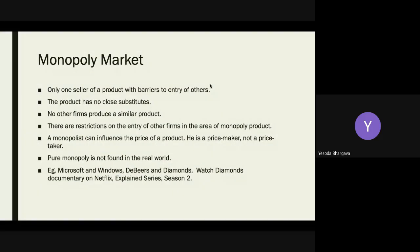Coming to the monopoly market — ideally there is only one seller of the product, with barriers to entry for others. What could act as barriers for entry into the same product segment? Being the only one in the market where others find it difficult to enter is a great advantage — you would ideally want to be in that situation.